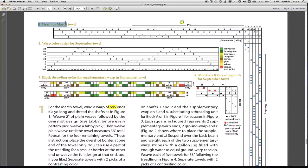Up here is the draft for the March towel. You're only going to concern yourself with what is at the top here, the threading, what is at the right here, the tie-up, and what is going down here, the treadling. You won't need to concern yourself with this number 2 warp color, because notice it says for the September towel. So we can ignore all that, we just need to know the draft for the March towel.